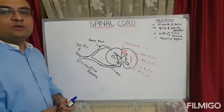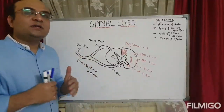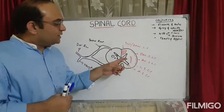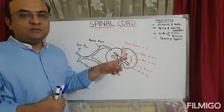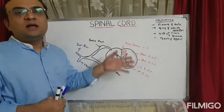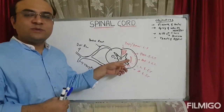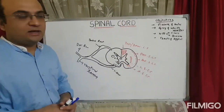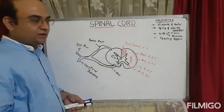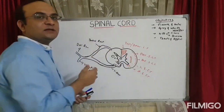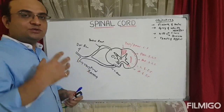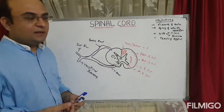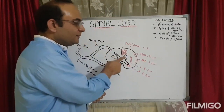Tracts are named based on their origin and termination. For example, the spinothalamic tract starts from the spinal cord and ends at the thalamus — hence 'spinothalamic.' Being in the lateral column, it is called the lateral spinothalamic tract. Similarly, the spinocerebellar tract starts from the spinal cord and ends in the cerebellum. Tracts are also named by the column in which they run.